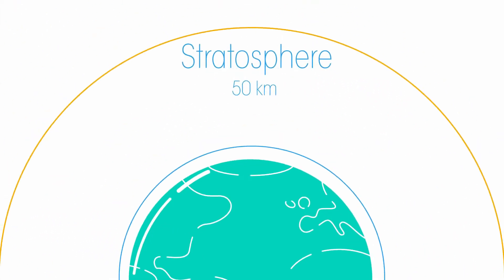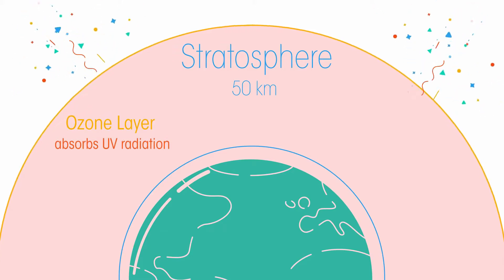Then the stratosphere, up to 50 kilometres, which contains the very important ozone layer. The ozone layer both heats the stratosphere and also absorbs and scatters harmful ultraviolet radiation from the sun, protecting all life on Earth.